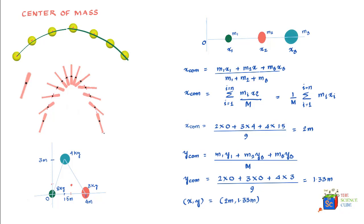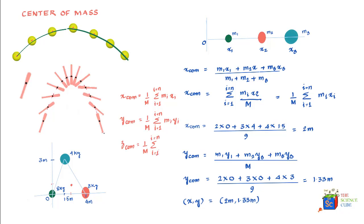For masses in three-dimensional space, the process is the same — find the x, y, and z coordinates separately using the same formula. x_cm = (1/M) Σ m_i·x_i, y_cm = (1/M) Σ m_i·y_i, and z_cm = (1/M) Σ m_i·z_i, where in each case i runs from 1 to n and M is the total mass of the system.